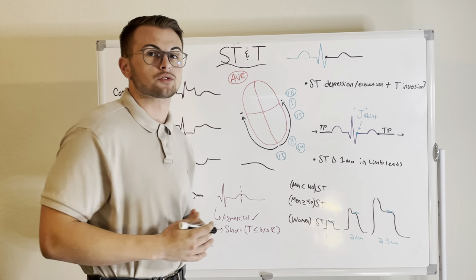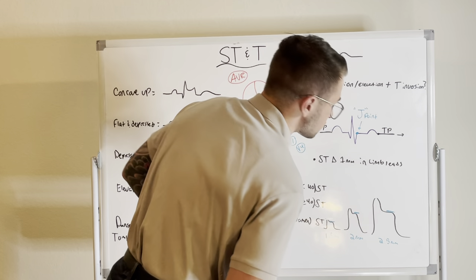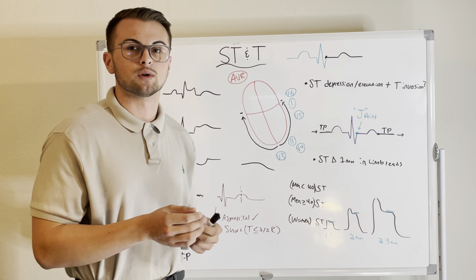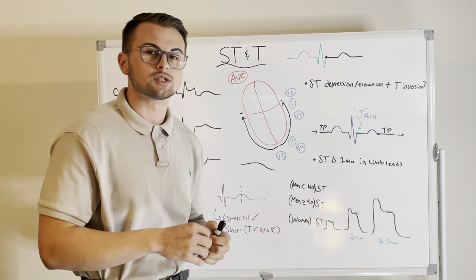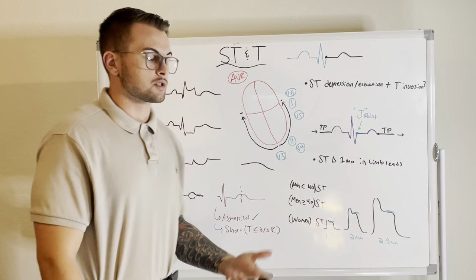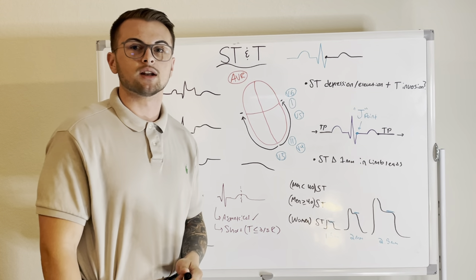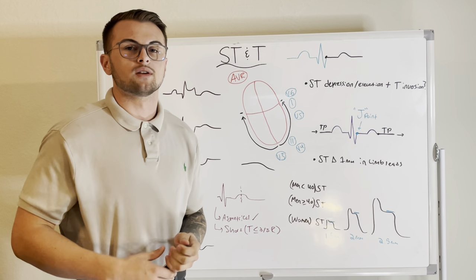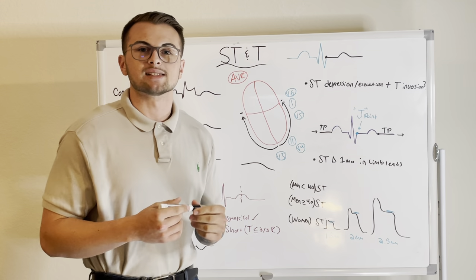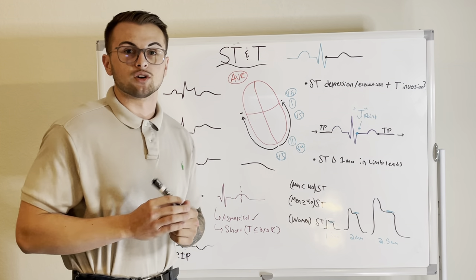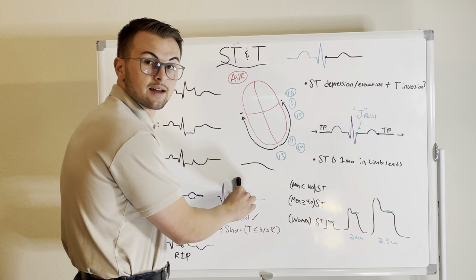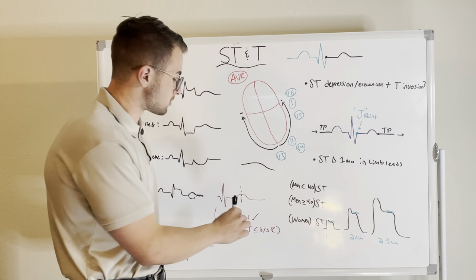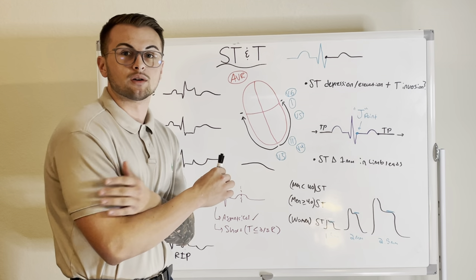The T wave should normally be asymmetrical — a little lean to the right when you're looking at the EKG is all right. Completely symmetrical or mirrored T waves are associated with ischemia, electrolyte abnormalities, or CNS changes like a massive CVA or hemorrhagic stroke. A good way to check: pretend the T wave is a pile of dirt and drop a stake in it. More dirt on the right side is good; equal amounts on either side is not good.